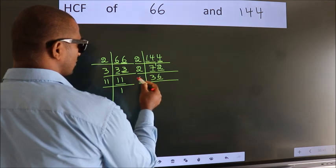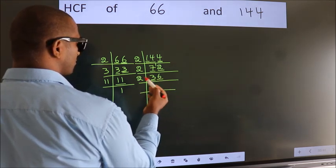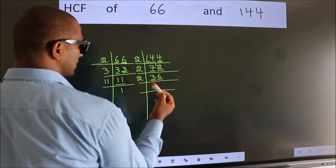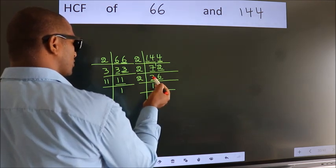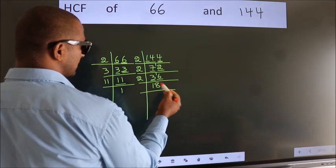Last digit 6, even, so take 2. First number 3, a number close to 3 in 2 table is 2 times 1 is 2. 3 minus 2, 1, 1 carried forward 16. When do we get 16 in 2 table? 2 times 8, 16.